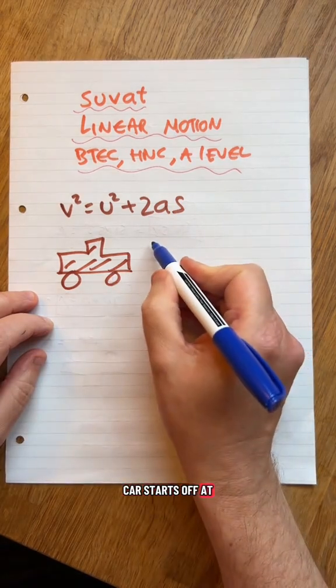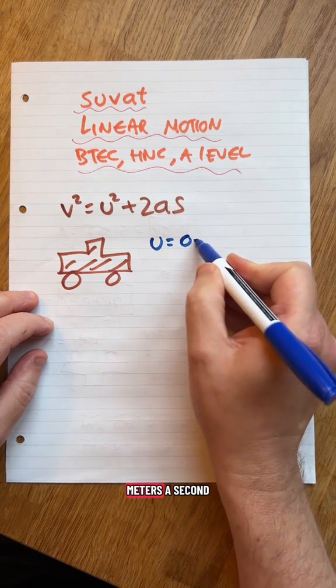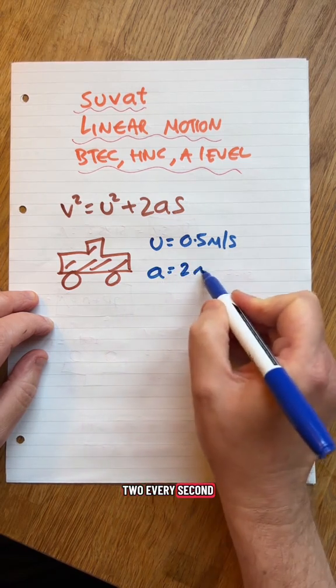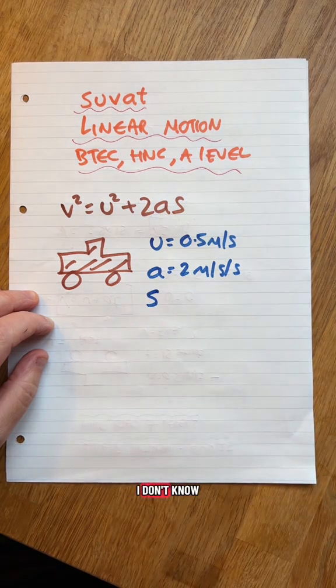Let's pretend this car starts off at U equals 0.5 meters a second. It accelerates at 2 every second, every second. The distance is going to be, I don't know, 50.